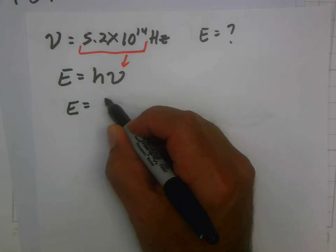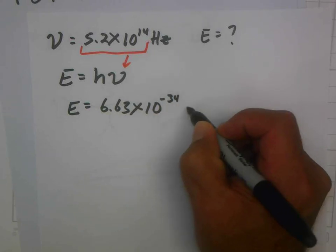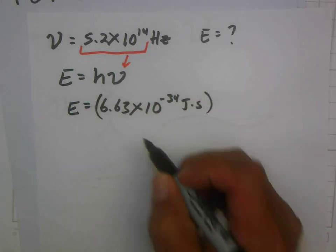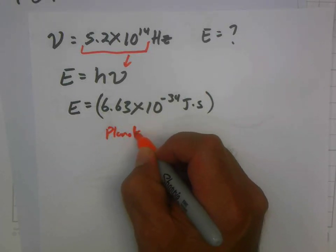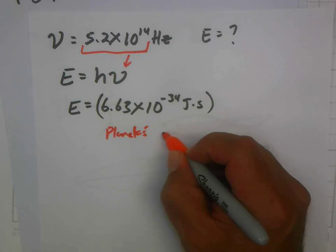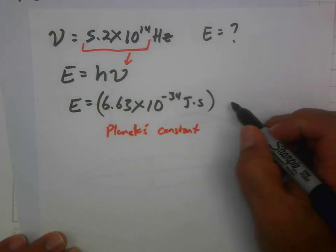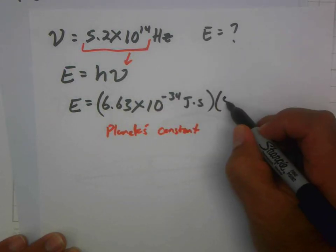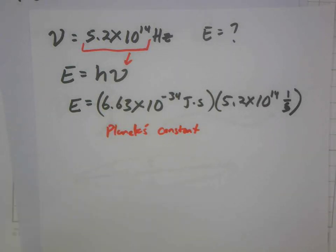Our E is going to be equal to 6.63 times 10 to the minus 34th joules times seconds. Remember that that's Planck's constant. And then you multiply it by your frequency here, 5.2 times 10 to the 14th. And remember that whenever I put a frequency into an equation, I'm going to not put it as hertz, but 1 per second or per second.